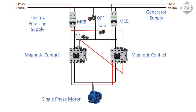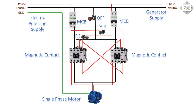Second magnetic contact connection: NC to NC outlet to first magnetic contact A2 connection, or generator line to PS switch connection. NC outlet to second magnetic contact A2 connection. First or second magnetic contact NC coalescing connection, or ground to single phase motor connection.